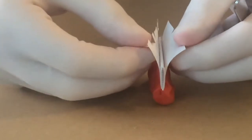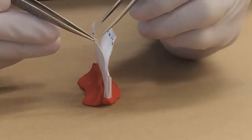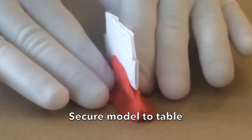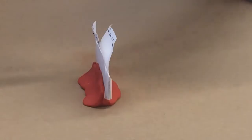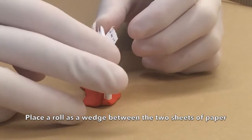The second exercise is parallel face suturing, which also tests suturing ability using two pliable needle hole targets. The model should be secured to the table as shown. Place a roll as a wedge between the two needle hole targets.